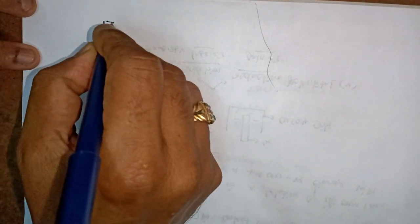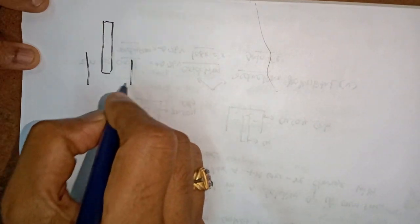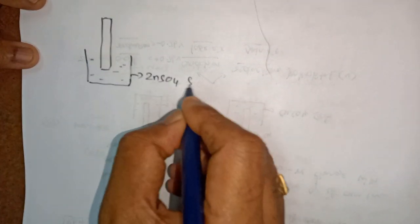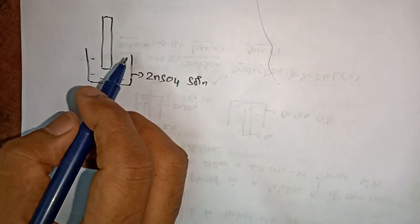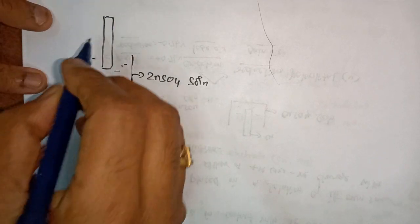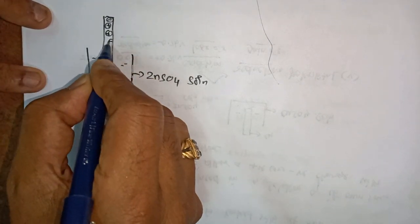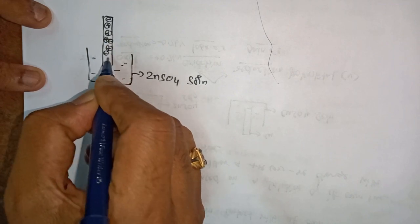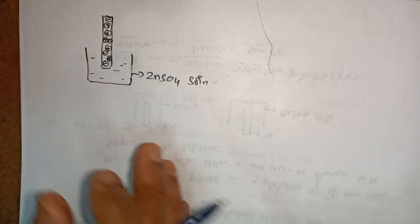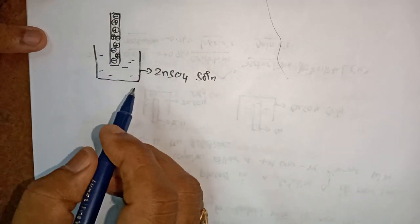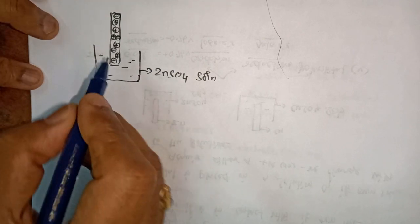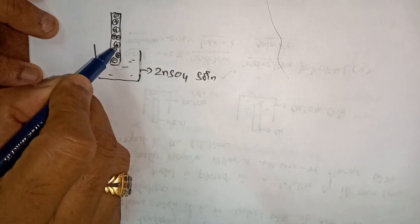How does the single electrode potential develop? I take a zinc rod and keep this zinc rod in its zinc sulfate solution. Any metal is a solid — it is considered to be an assemblage of metal ions and electrons. So electrons and metal ions are both present in any metal. When I keep zinc in zinc sulfate solution, the metal ions present in the metal will start to come out from the surface.